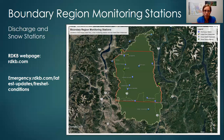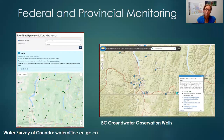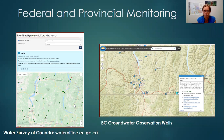There are a variety of different monitoring stations within the Boundary Region. This map is found on the RDKB webpage under emergency response for freshet, looking specifically at discharge stations and snow stations. There are also a number of climate stations throughout the region. A lot of our monitoring is done federally and provincially. The main ones we're looking at for drought are the Water Survey of Canada, which looks at discharge — your water levels and flow in the system. It does focus on larger systems, so it can be harder to interpret effects on smaller systems.